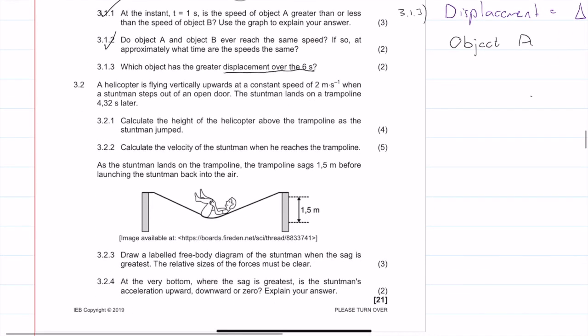Next, we move on to a different question. A helicopter is flying vertically upwards at a constant speed of 2 meters per second. When a stuntman steps out of an open door, the stuntman lands on a trampoline 4.32 seconds later. If we had to draw out this scenario right here, we've got some kind of helicopter. We've got a nice helicopter there, and we have a stuntman. The helicopter is traveling at 2 meters per second upwards initially, and then the stuntman jumps out.